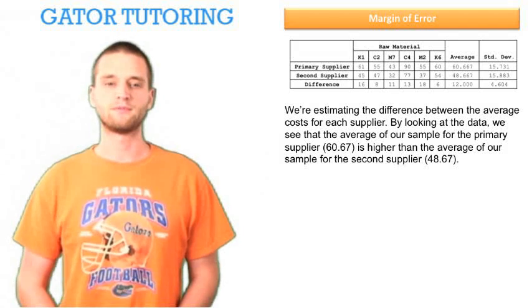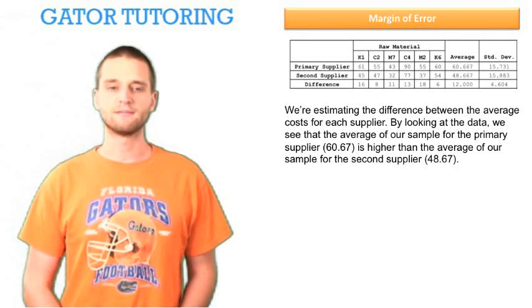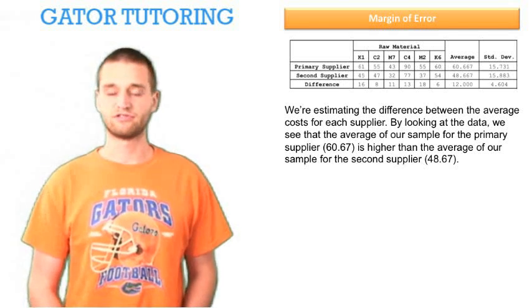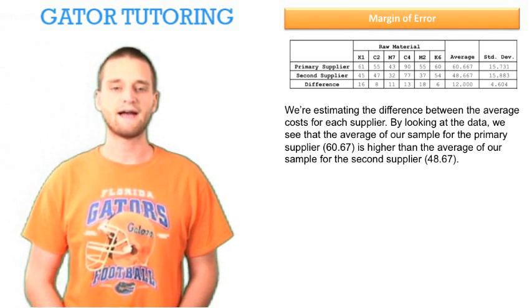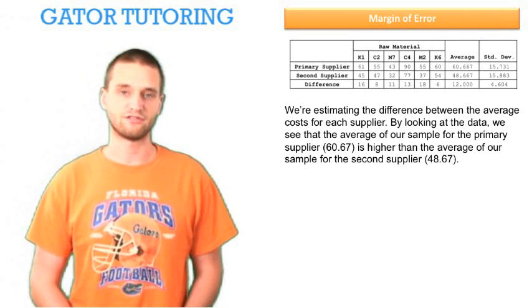We're estimating the difference between the average costs for each supplier. By looking at the data, we see that the average cost of our sample for the primary supplier, which is $60.67, is higher than the average cost of our sample for the second supplier, which is $48.67.